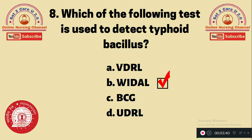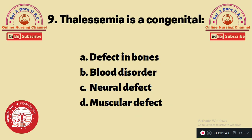Question 9: Thalassemia is a congenital — A. Defect in bone, B. Blood disorder, C. Neural defect, D. Muscular defect. Thalassemia is a congenital blood disorder. The correct answer is option B.